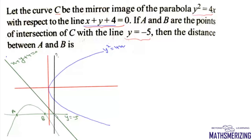We need to find the equation of the reflected line. First, we find the point of intersection of y=-5 with x+y+4=0. Putting y=-5 gives x=1, so this point is (1, -5). Now this angle is 45°, so this angle will also be 45°, meaning the reflected line will simply be x=1.